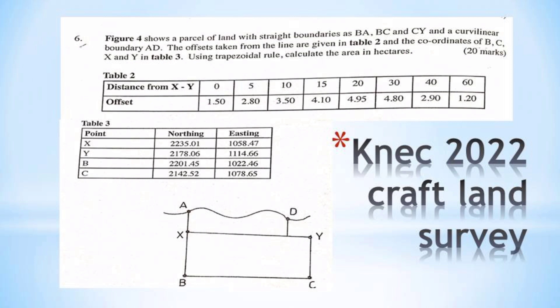We can observe Table 2, where we have been given distances from X to Y with intervals. The interval does not look uniform - the interval changes. Then we're given the offsets there.